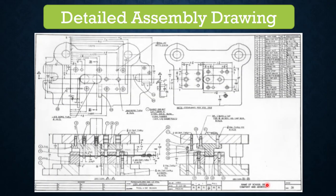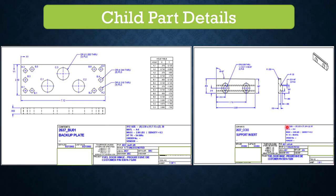Next, we can see the detailed assembly drawing. Any die drawing should have one complete page showing the die assembly condition view, and from there we pick up the parts — similar to how we show a human body with all its components. The 2D drawing should include important segments, cut section views, and other details to give the complete picture of the die. Then child part details — as explained, each and every part must be captured in the 2D drawing. This shows a backup plate and a support insert for the progressive die.